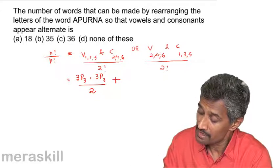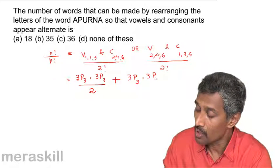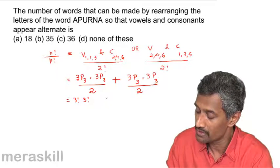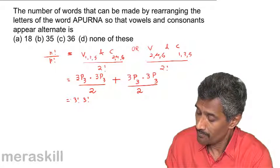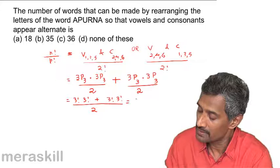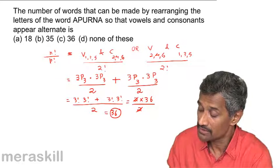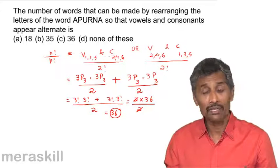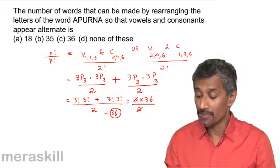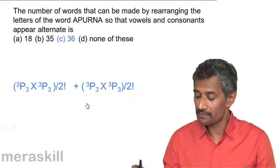The 3 vowels can be arranged in the 3 vowel positions in 3 factorial / 2 factorial ways (dividing by 2 for the identical A's), and the 3 consonants can be arranged in 3 factorial ways. This applies to both alternating patterns. So the total is: (3 factorial / 2 factorial × 3 factorial) + (3 factorial / 2 factorial × 3 factorial) = 3 × 6 + 3 × 6 = 18 + 18 = 36. There are 36 such arrangements possible.